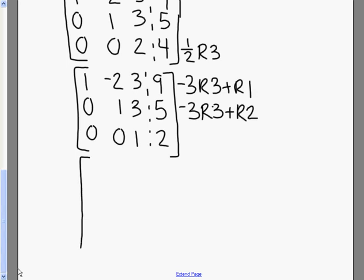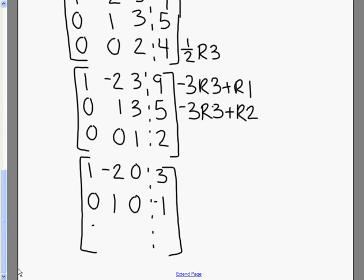So our matrix now is going to become 1, negative 2, 0, 3. Our second row becomes 0, 1, 0, negative 1. And our last one is going to become 0, 0, 1, 2.